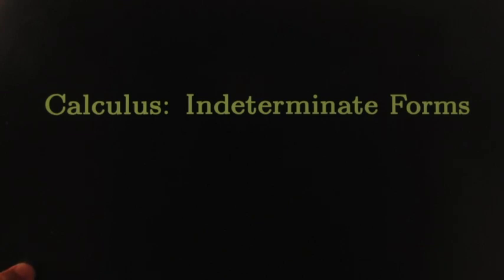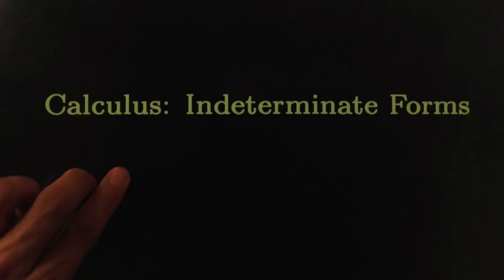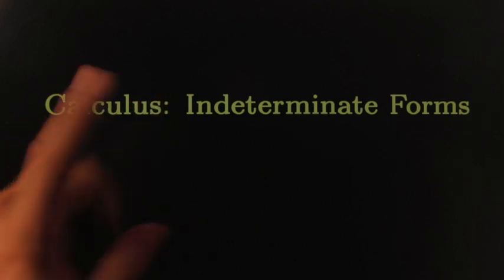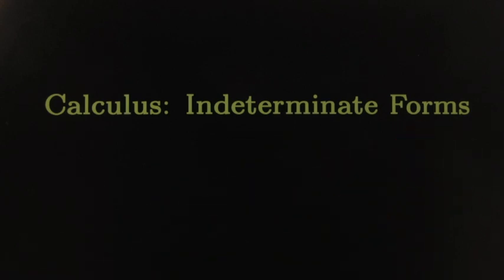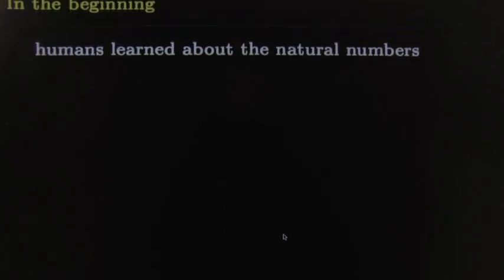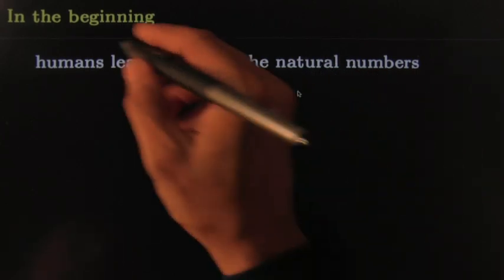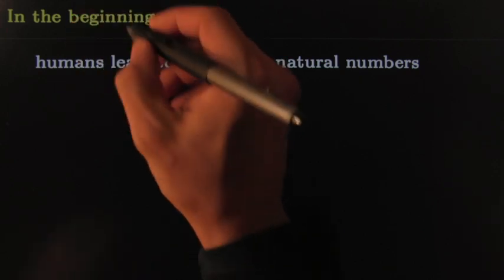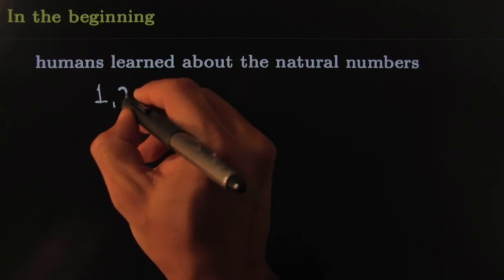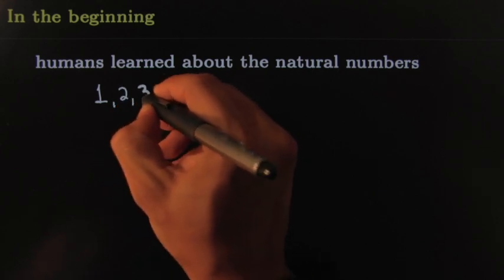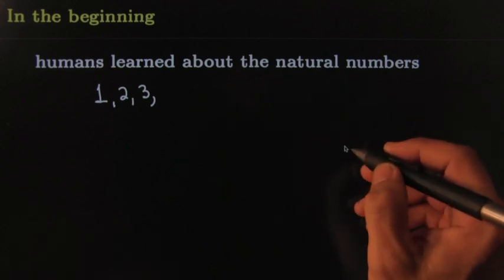Today we're doing the story of indeterminate forms, and the story starts a long long time ago — maybe a couple thousand years ago. It starts with simply counting numbers. Suppose we go back to the very beginning when humans first learned how to count natural numbers. By natural numbers we mean a specific kind of numbers — they look like this: one would be a natural number, two would be a natural number, three would be a natural number, and so on.